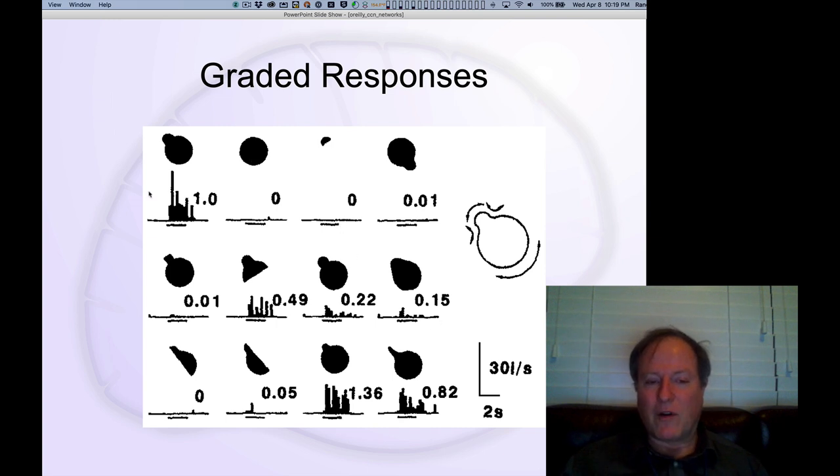Over all these stimuli, you're getting a graded pattern of responding. This is inevitably what you see when you look at neurons in the brain. Even if they have these very strange, high-level, very sensitive feature detection properties, they still have graded responses over some hard-to-define dimensions of overall shape.